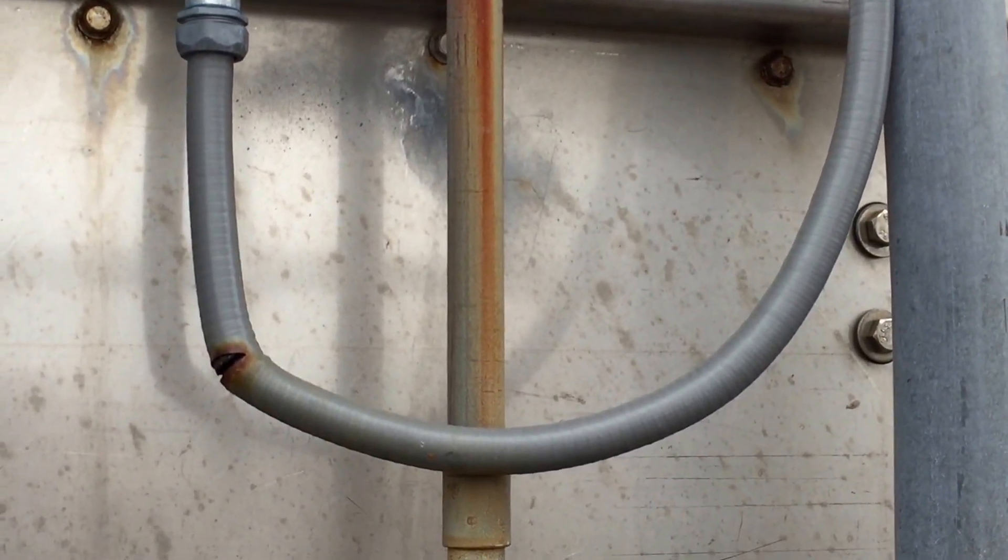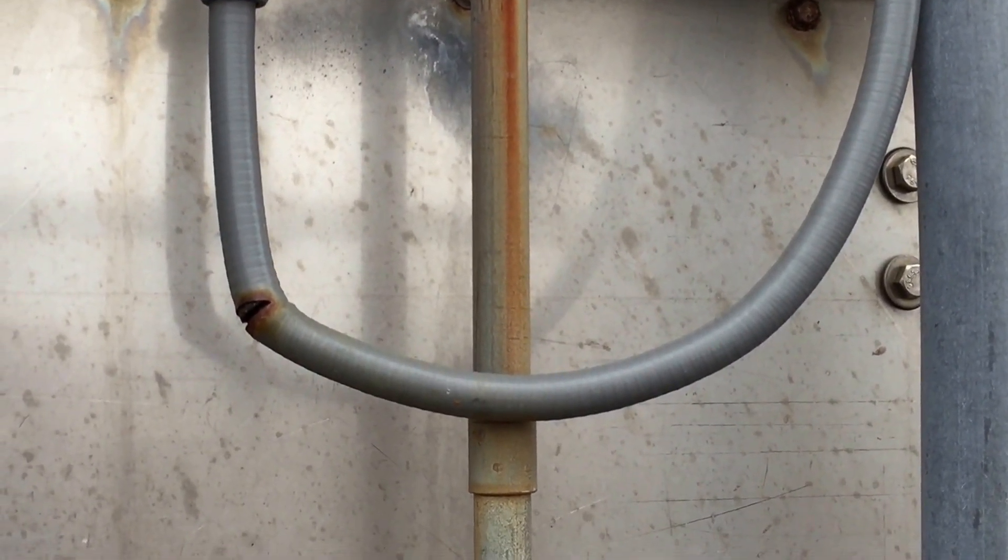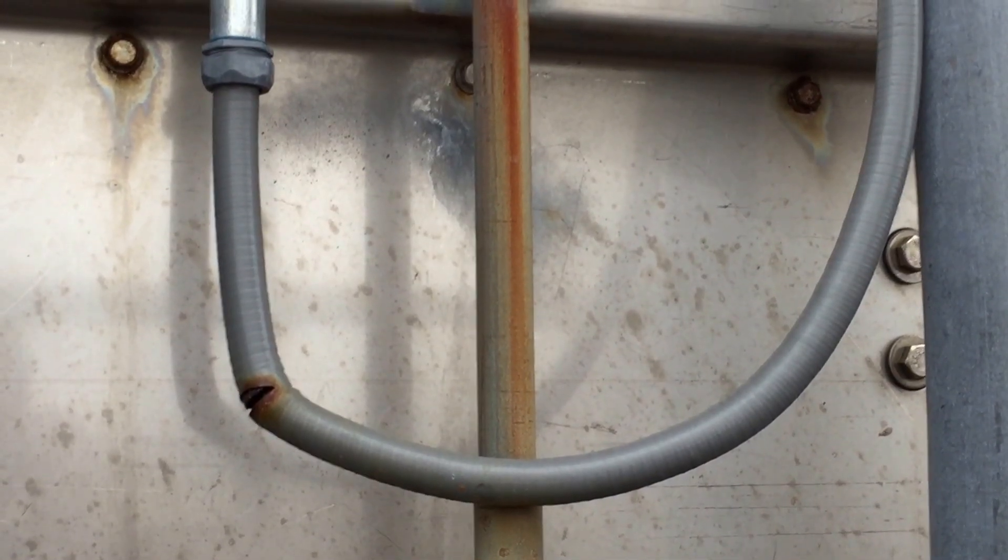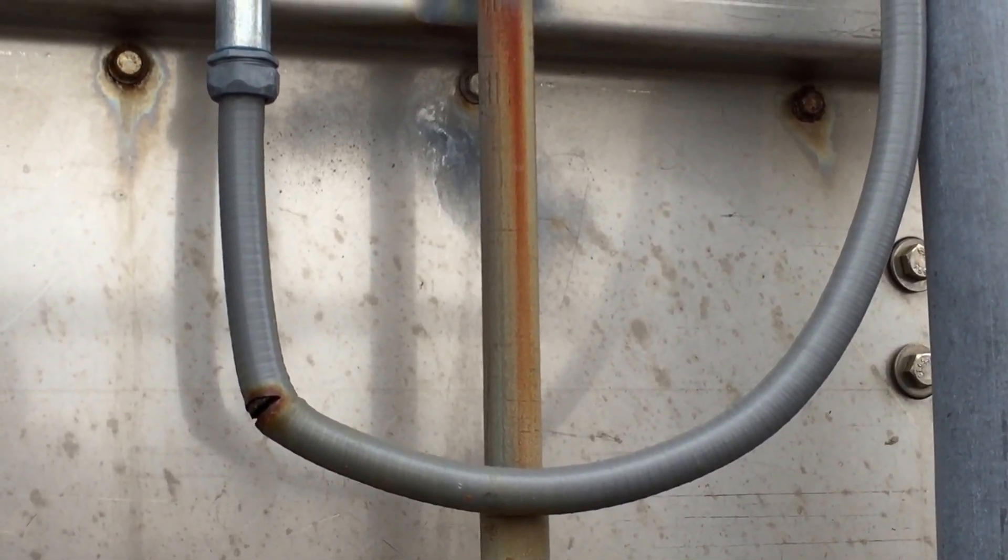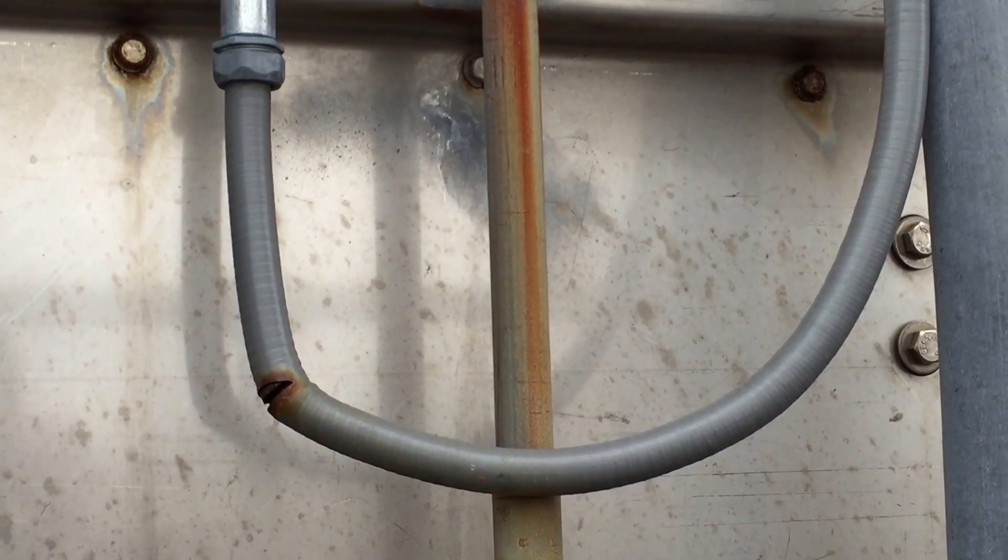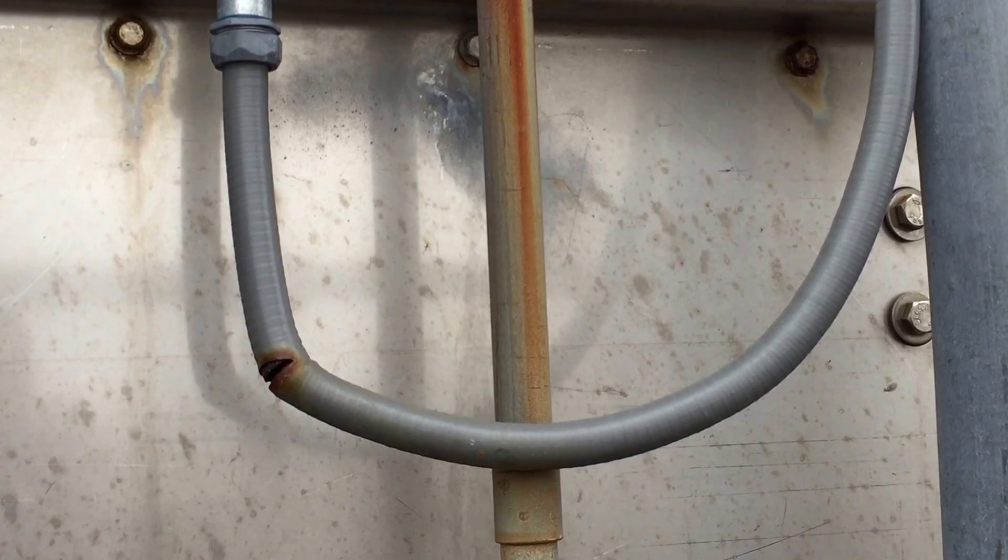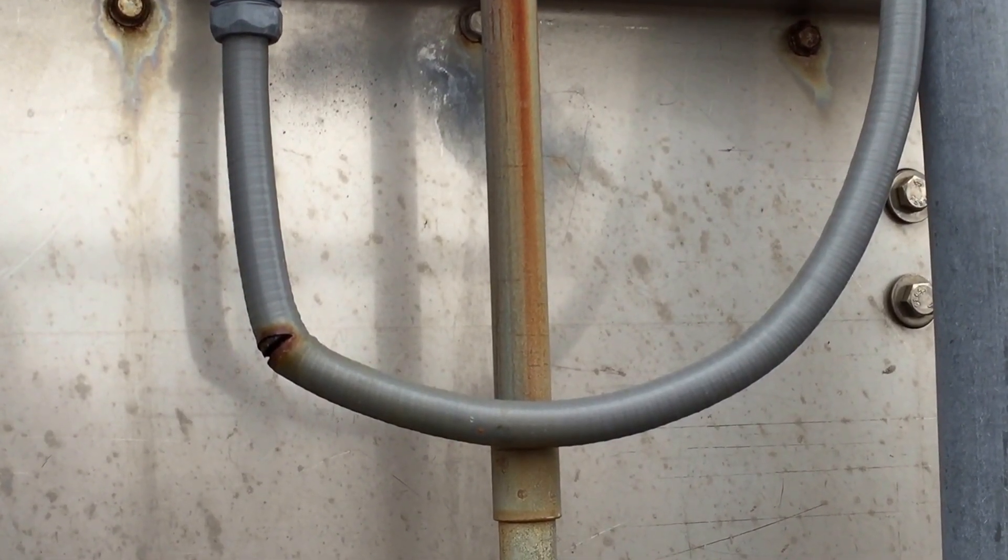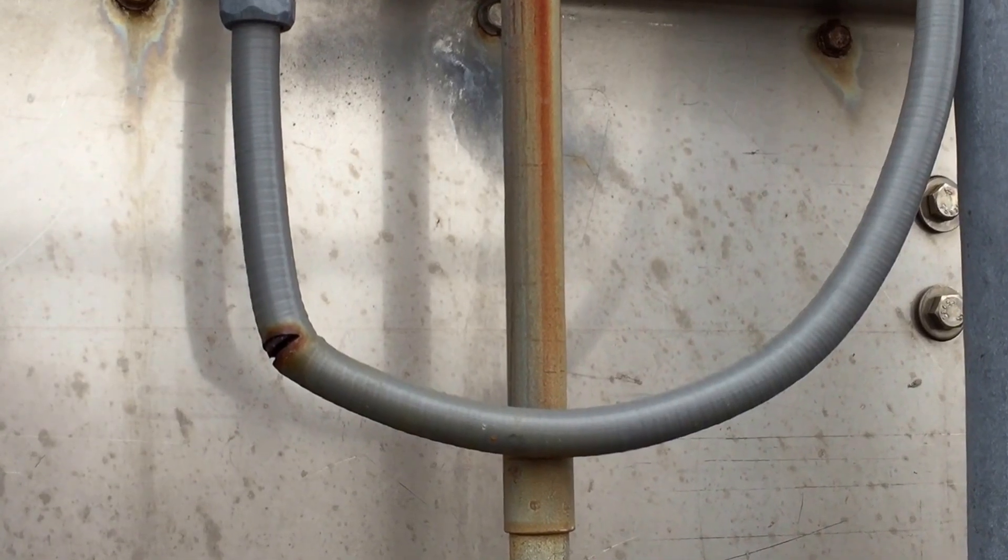Now, section 350.24 says that bends in liquidite flexible metallic conduit have to be made so as to not damage the conduit. But I think what happened here, these bends were a little too sharp, they kinked it, and damaged the non-metallic jacket, and this is the result.